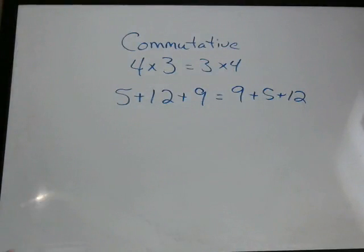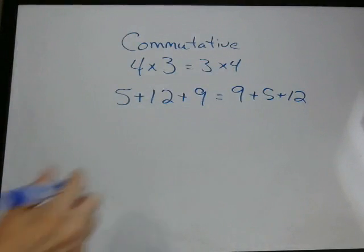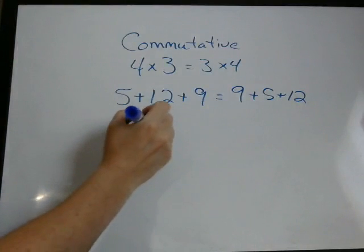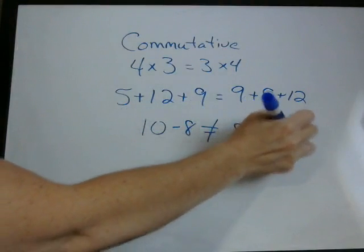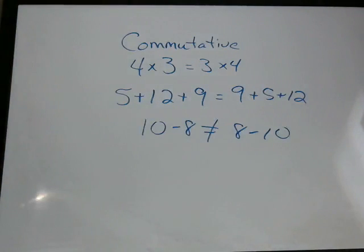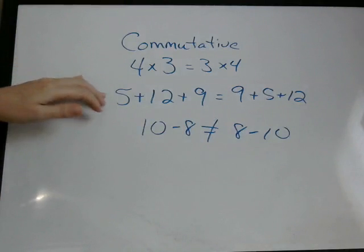Obviously with division or subtraction, that's not the case. For example, with subtraction, 10 minus 8 is not the same thing as 8 minus 10. So the commutative property only works with multiplication and addition, not subtraction or division.